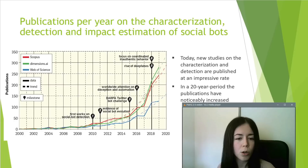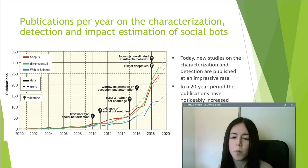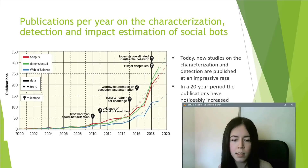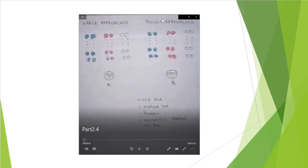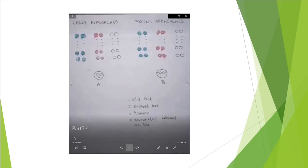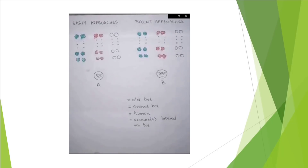In this figure, we can see that over a 20-year period, publications have noticeably increased across three bibliographic online databases. A milestone in the graph is that in 2010, the first work on social bot detection was addressed. Now we are going to discuss the differences between early and most recent approaches to social bot detection as described in the article.